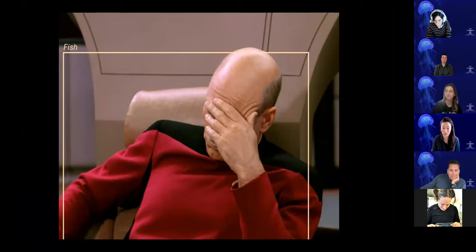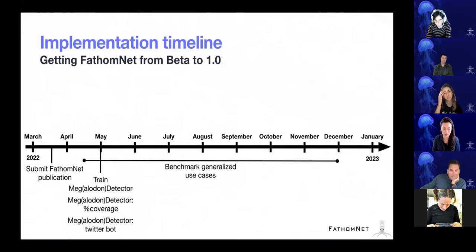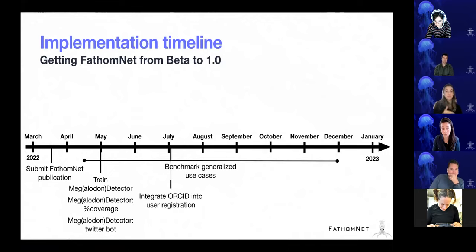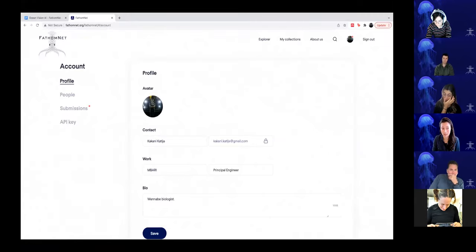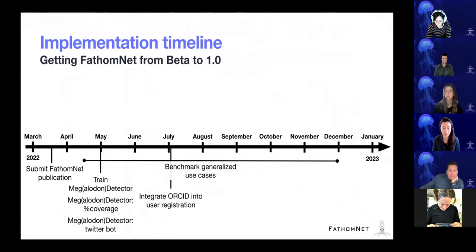One of the things we're going to try to do is incorporate this into a Twitter bot to help provide engagement with the FathomNet dataset. In addition, we are going to integrate ORCIDs into user registration. In your profile you'll be able to add your contact information as well as your ORCID, which will be important as we start thinking about database versioning and providing attribution for people's contributions.